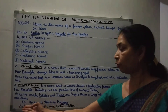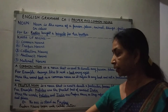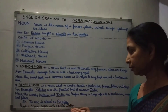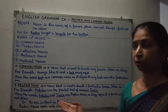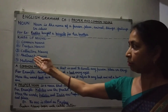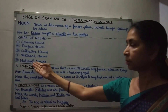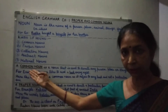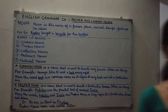One more thing you have to keep in mind: proper nouns begin with capital letters. Collective nouns, abstract nouns, and material nouns I will explain in the next video. Thank you and have a nice day.